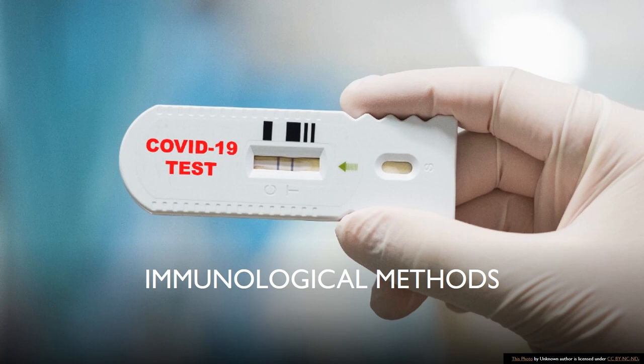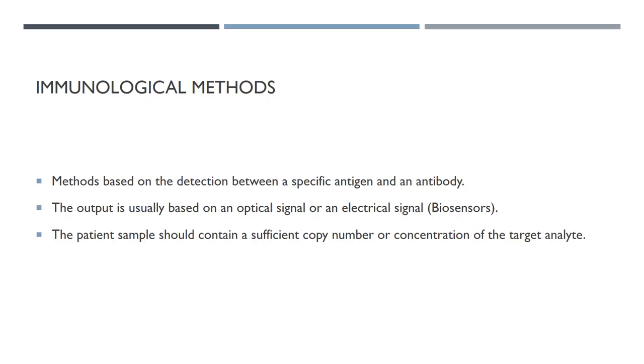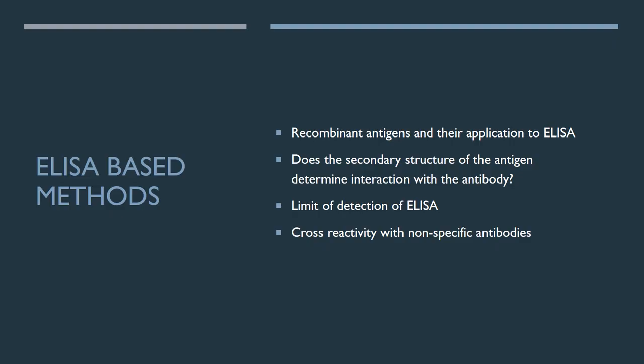There are also other methods which are very common nowadays which are the immunological methods using the COVID-19 test strip. However, these are not really reliable because they are bound to error. There are methods which rely more on ELISA and biosensors but all of these methods are not really mainstream. The mainstream is the RT-QPCR method.